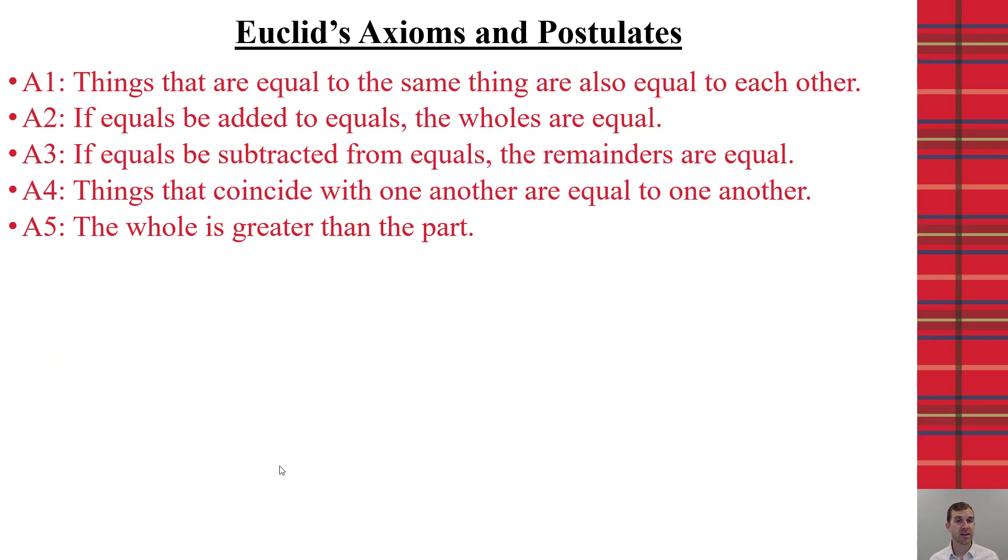So, when we look at the five axioms that Euclid founded on, we have that things that are equal to the same thing are also equal to each other. If equals be added to equals, the wholes are equal. If equals are subtracted from equals, the remainders are equal. Things that coincide with one another are equal to one another. And then the whole is always greater than the part.